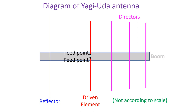As the parasitic elements have zero RF voltage at the centre, they can be directly attached to the boom. However, this will electrically shorten them, and usually a correction in length is needed to compensate. There are also versions in which all elements are insulated from the boom. The two halves of the centre-fed dipole have to be insulated at the location of the boom.